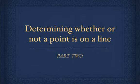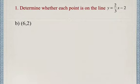This is the second part of this lesson. We're looking at an example of whether or not the point (6,2) is on the line y equals 2/3x minus 2. We need to determine what's on the left-hand side of the equation, which is y. From our ordered pair, y is equal to 2, because it's the second coordinate.